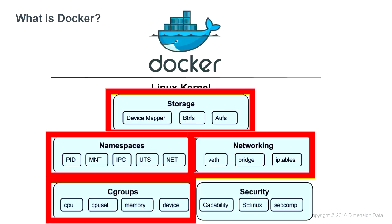Next: cgroups, or control groups. This allows you to say for a specific process, only allow it to have access to, say, 20% of the CPU or 500 megs of memory. cgroups combined with namespaces give you a nice way of running a process almost like a virtual machine — it can't see other processes, can't access IPC, can't communicate with processes outside the namespace, and can't eat up all the memory or CPU on the box.